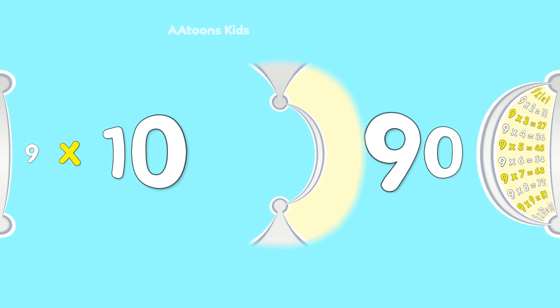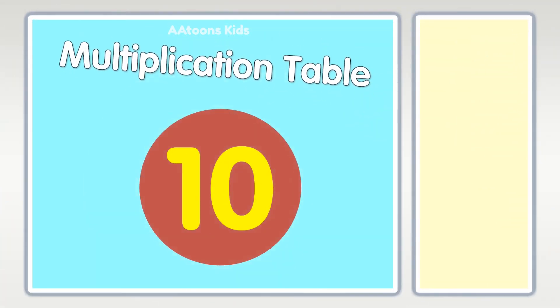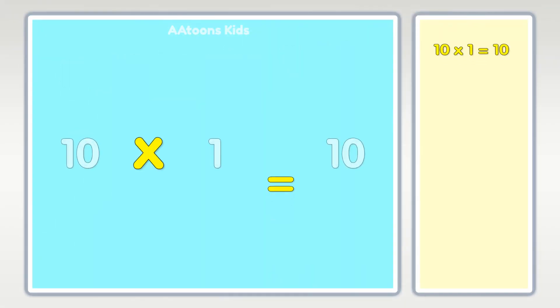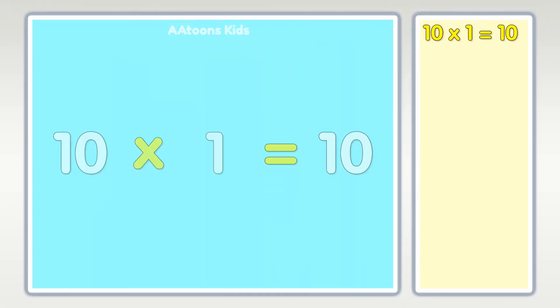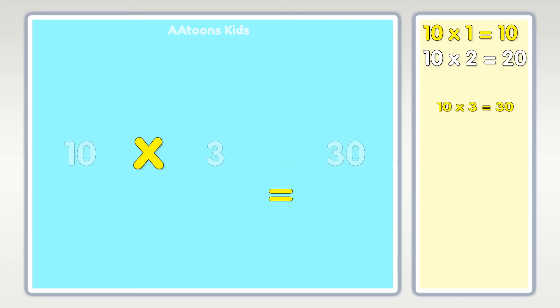Table of ten: ten times one is ten, ten times two is twenty, ten times three is thirty.